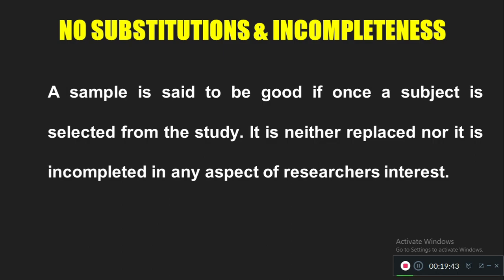For example, if a nursing student selected as a sample is not present at home, you cannot collect data from their mother or father on their behalf, because that is not a representative of the population — that would be substitution. However, if a patient dies in the middle of the research process, substitution or replacement of the sample is allowed in that case. Most of the time, do not collect data on behalf of the sample from another person, and always try to get complete information.